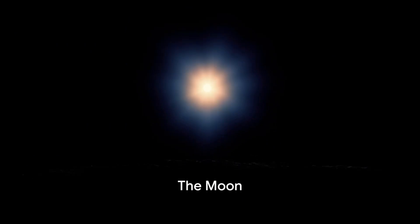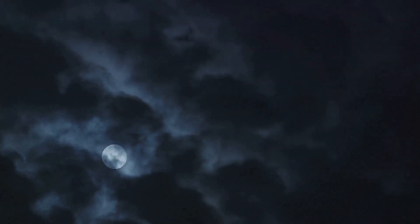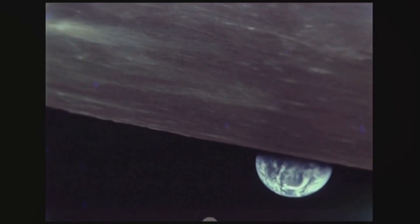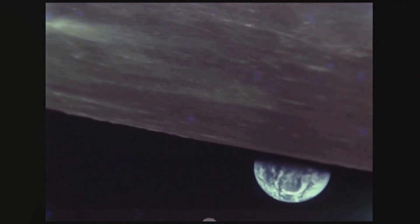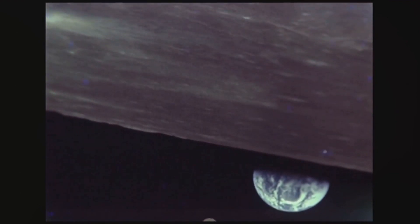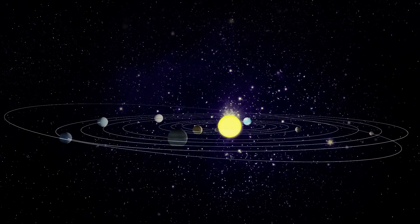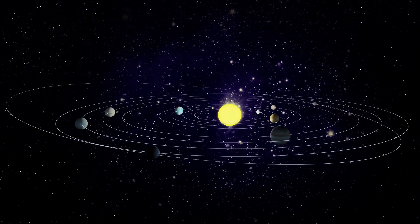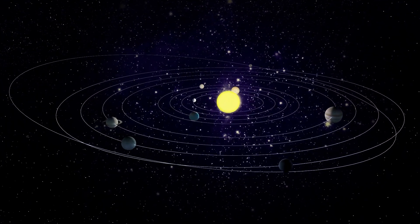Our first stop is our closest celestial neighbor, the Moon. As the brightest object in our night sky, the Moon is a constant companion. Yet its surface is a barren, rocky landscape, pockmarked by countless craters from billions of years of meteor impacts. It's a stark reminder of the celestial ballet that plays out in our solar system every day.